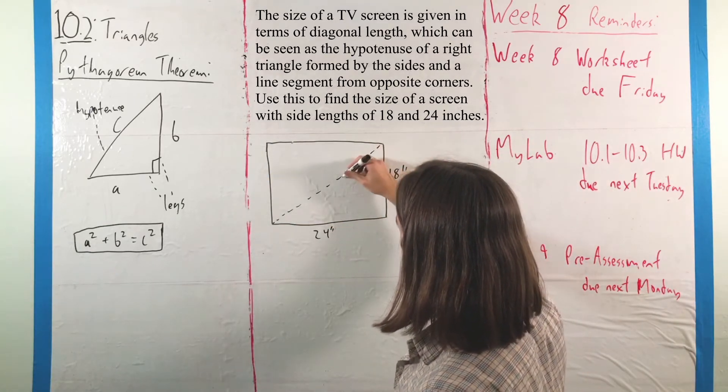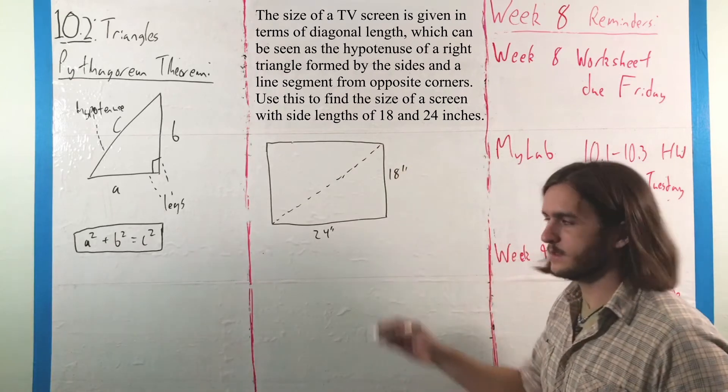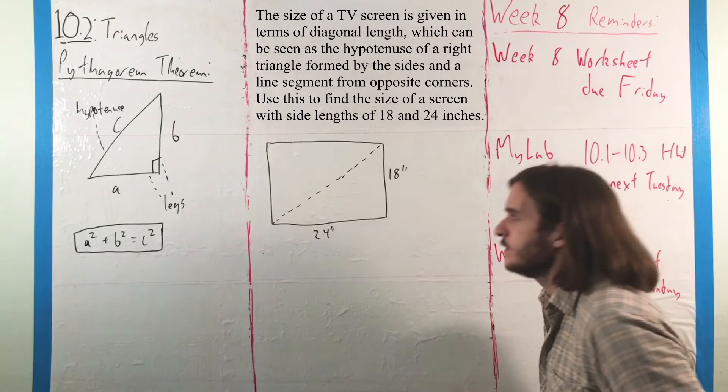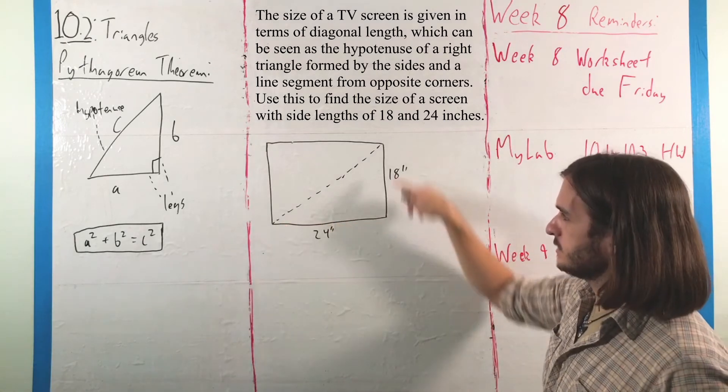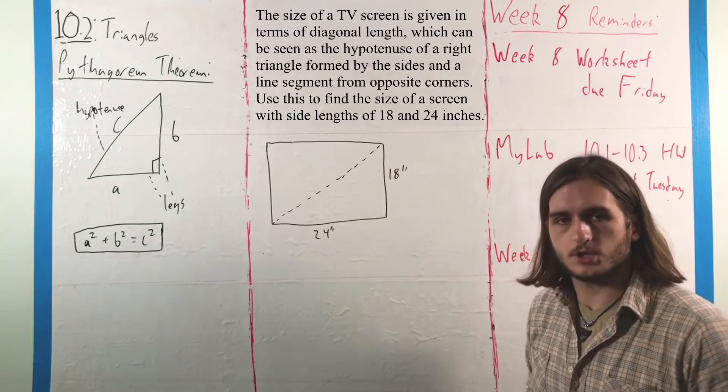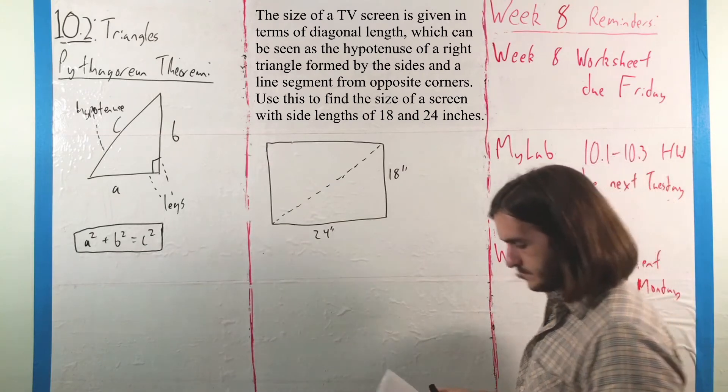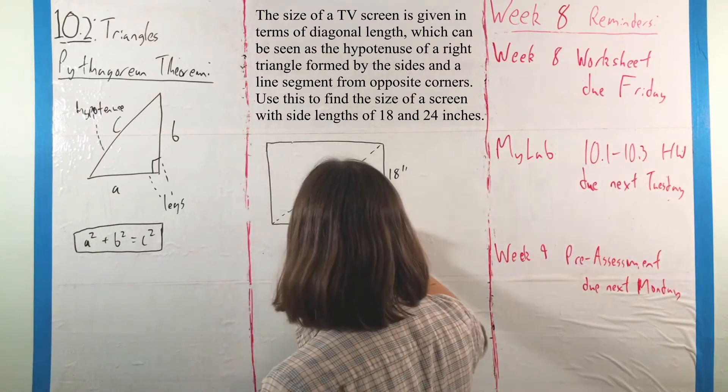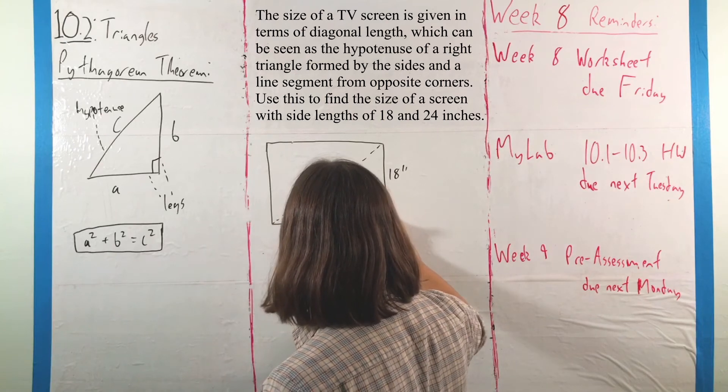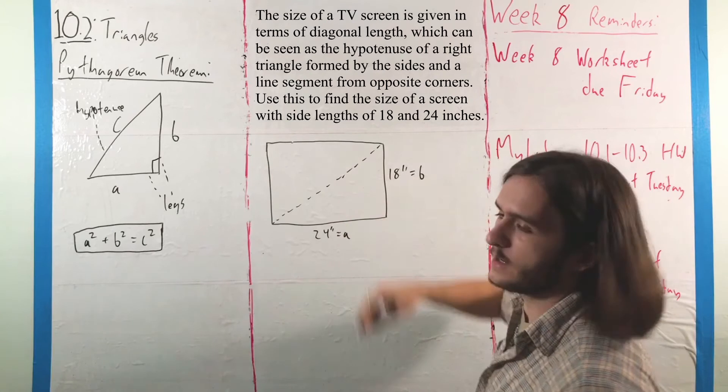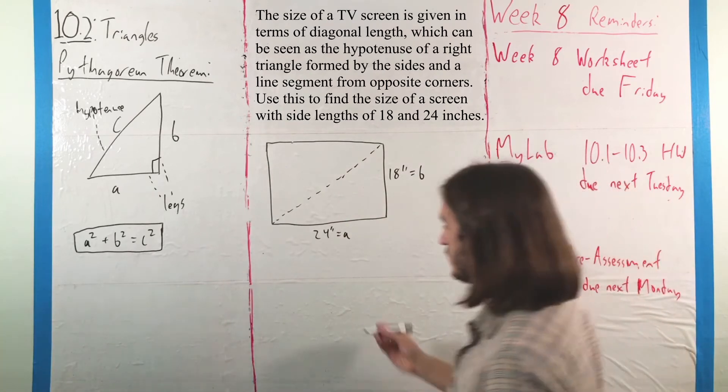That length will be the right triangle hypotenuse we're thinking of as this diagonal relationship forms a right triangle. So, thinking of it in those terms, we could say that 24 is A, 18 is B, and we're trying to find C.